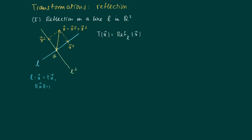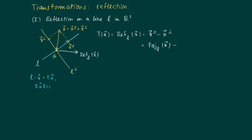Now consider for this vector the reflection in L. This is just mirroring x in the blue line. We see the reflection of x in L, and we see that this is no more than the vector x minus the vector x-perpendicular — the orthogonal part of x on L. So the parallel part here is no more than the projection of x on L, and the orthogonal part is x minus its projection on L.